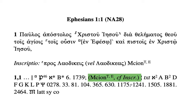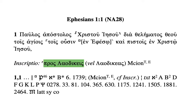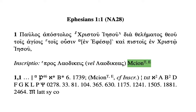Marcion is an early testimony of the omission of 'en Ephesō.' Then they give you a 'cf. inscription' note. This links up to the line just above where it says 'inscriptio,' meaning the title at the beginning of a book. There is a replacement of the title: rather than 'to the Ephesians,' we have 'to the Laodiceans' — or with a slightly different spelling in another version. According to Marcion, the title of the book is actually 'to the Laodiceans,' not 'to the Ephesians.' That Marcion witness comes through Tertullian and Epiphanius rather than directly.